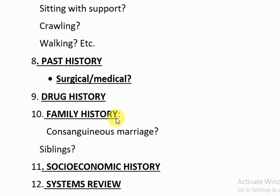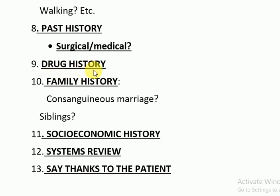Then the step is the past history — any significant surgical or medical history. You would ask if the child has undergone any surgery, or if there is any significant medical history, or if the child is on any drugs. For example, a child with congenital hypothyroidism may be on thyroxine — drug history is important. There are many other examples as well.